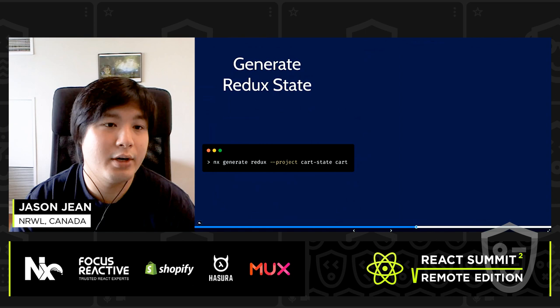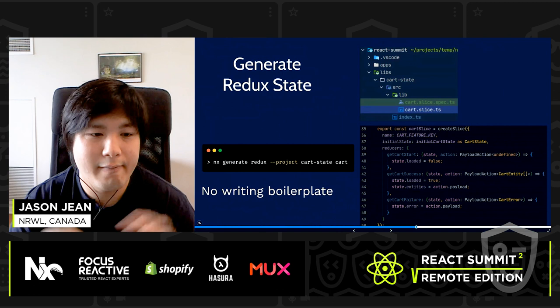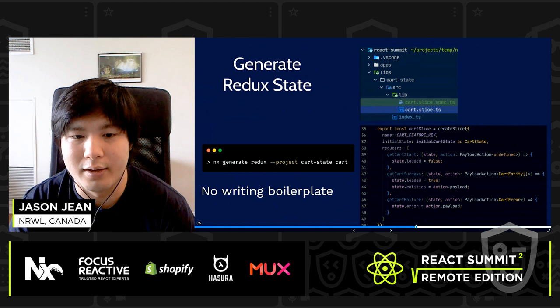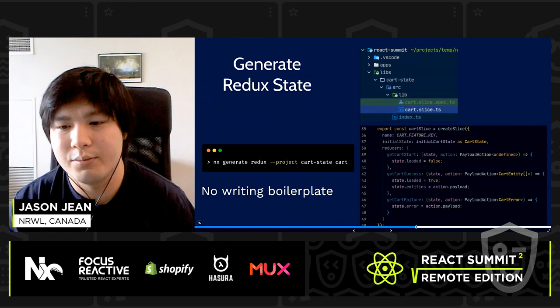You can also generate Redux state. Everyone knows there's a lot of boilerplate, and even with changes in the Redux toolkit, there's still a lot of code to write to get started. Now you can generate it using `nx generate redux cart`, directing into the project of cart-state. This automatically generates a slice with the cart, and it even has some actions predefined that you can change after the code is generated.